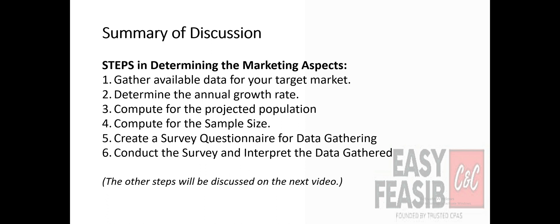Let's summarize what we discussed. Step 1: Gather available data for your target market. Step 2: Determine the annual growth rate. Step 3: Compute for the projected population. These three steps were discussed in the previous video — make sure you watched it to understand our topic. Step 4: Compute for the sample size. Step 5: Create a survey questionnaire for data gathering. Step 6: Conduct the survey and interpret the data gathered. The remaining steps on determining the marketing aspect of a feasibility study will be discussed on the next video.